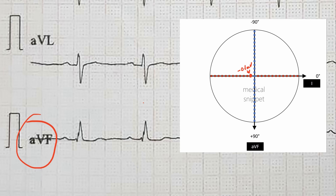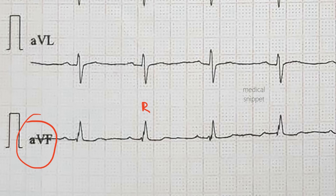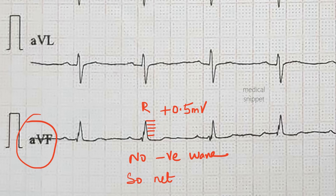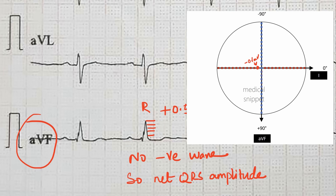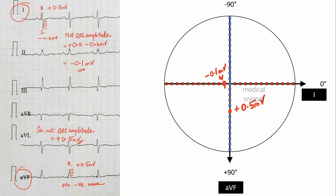In lead AVF the R wave amplitude is positive 0.5 millivolt, and there is no major negative waves. Let's plot it in the diagram. Draw perpendicular lines from this point — the point where they meet is the QRS axis. Here it is more than 90 degrees, so there is right axis deviation.